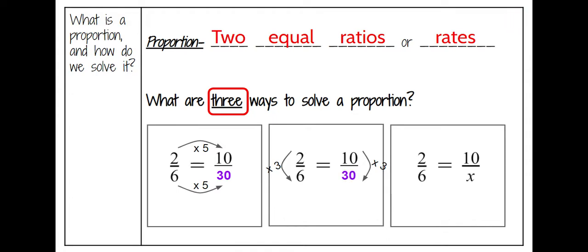The third relationship you can use to figure out the missing value in a proportion is cross products. The cross products of any two equal fractions will always be equal. So if 10 times 6 is 60 and 2 times x is 2x, you can set them equal to each other to form a one-step equation where you can solve and get the missing value. Again, the same answer is 30. So these are three ways in which we can solve a proportion.